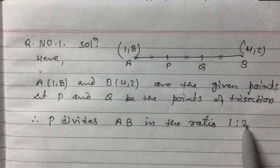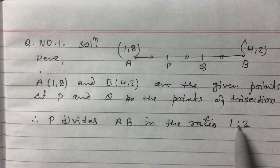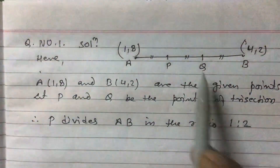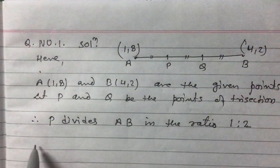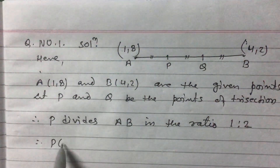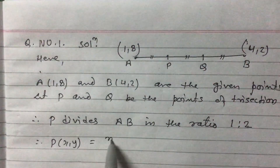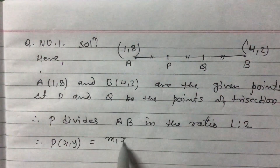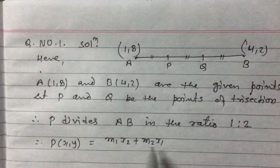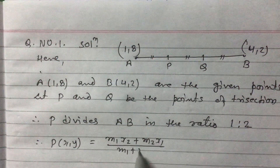Now X1, Y1, X2, Y2, M1, M2 are defined. Using the section formula we will get the coordinates of P. Therefore P(x, y) is given by: M1·X2 + M2·X1 divided by M1 + M2, comma M1·Y2 + M2·Y1 divided by M1 + M2.